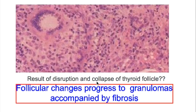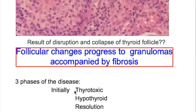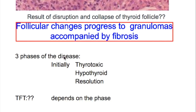What's the result of disruption and collapse of thyroid follicles? Follicular changes progress to granulomas accompanied by fibrosis. There are three phases of the disease: initially there is a thyrotoxic phase, then a hypothyroid phase, and then resolution.